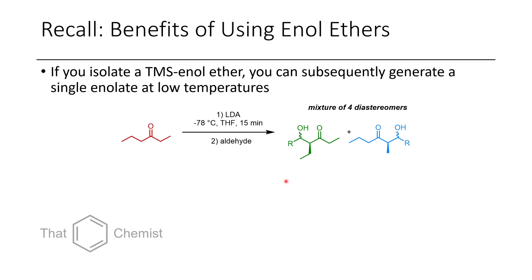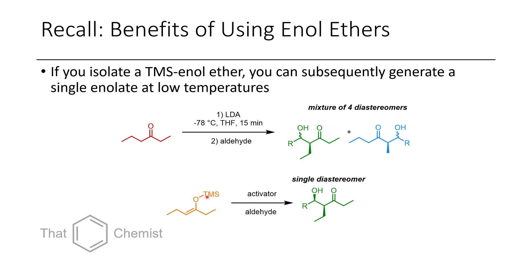If you recall from our earlier lecture, lecture 18, where we were talking about asymmetric alkylation reactions, if you end up isolating a TMS enol ether, you can choose to access one product over the other. If you treated this with LDA, you'd get a mixture of products, and the advantage to using a TMS enolate is that you can get a single diastereomer of your product — a huge advantage, as this could be much easier to separate.